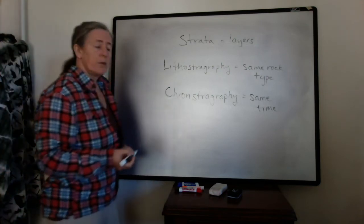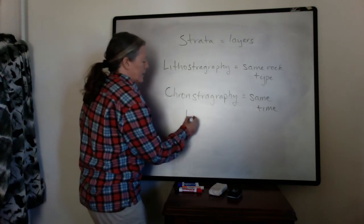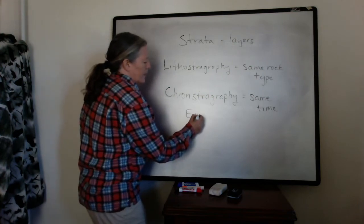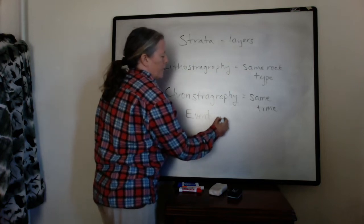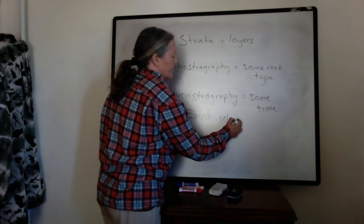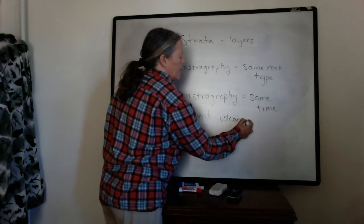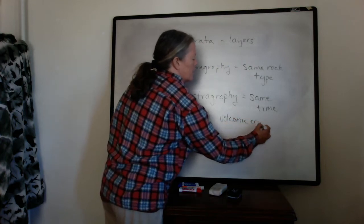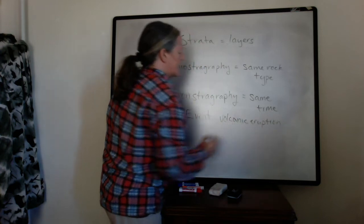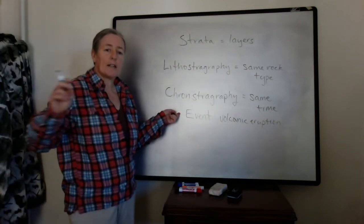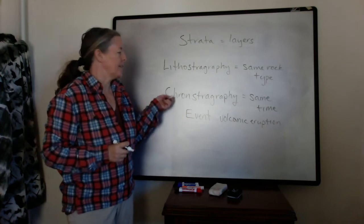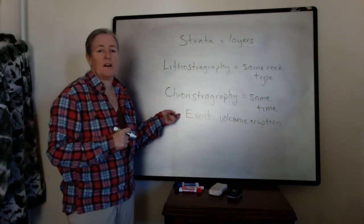One of them that we will use right now is an event, for example, a volcanic eruption. If it produces ash that gets preserved in the sedimentary record and we can correlate that ash bed across places, then that gives us sort of a moment in time.